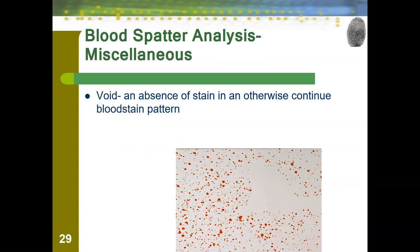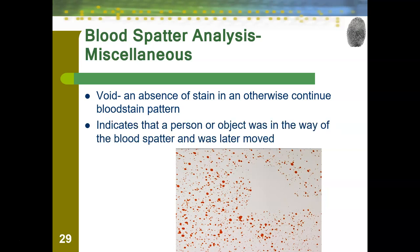We have a few miscellaneous patterns to discuss. First, a void is an absence of stain in an otherwise continuous bloodstain pattern, indicating that a person or object was in the way of the blood spatter and was later moved. In this picture, you can see the void — a blank spot — that is likely the shape of a wrench, with a handle and crescent-shaped top. So the wrench was there when what looks like high-velocity impact spatter — likely a gunshot — occurred. But then someone picked up the wrench and moved it. Can we find that wrench somewhere else? It probably has good fingerprints on it. Voids can help establish a chain of events but raise questions about why someone would move something.